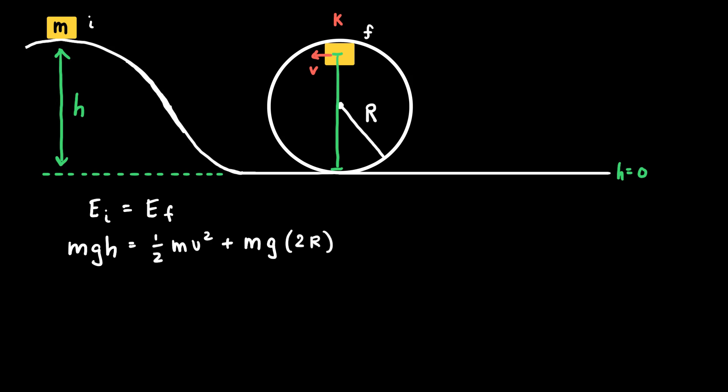And so the first thing I notice about this equation that I'm writing is that there is a mass in every term which can be canceled. And so this equation will simplify to GH equals one-half v squared plus 2GR.